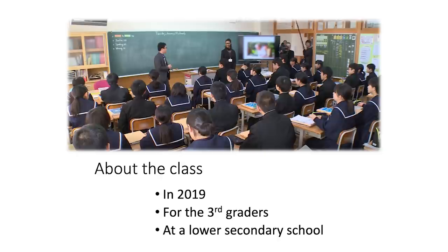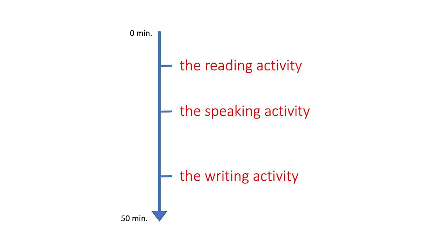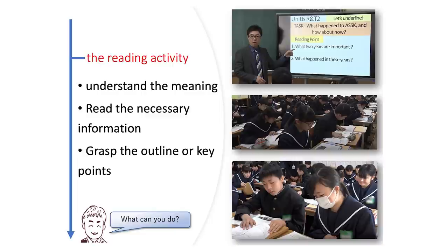This class was conducted in 2019 for third-year students at a secondary school in Gifu, which is located in central Japan. The students in the class participated in three language activities: reading, speaking, and writing. In the reading activity, the students read brief paragraphs from their textbook about the personal life of Aung San Suu Kyi. They worked by themselves on grasping the outline of some events in her life. Then they confirmed in pairs whether they could understand the outline correctly.